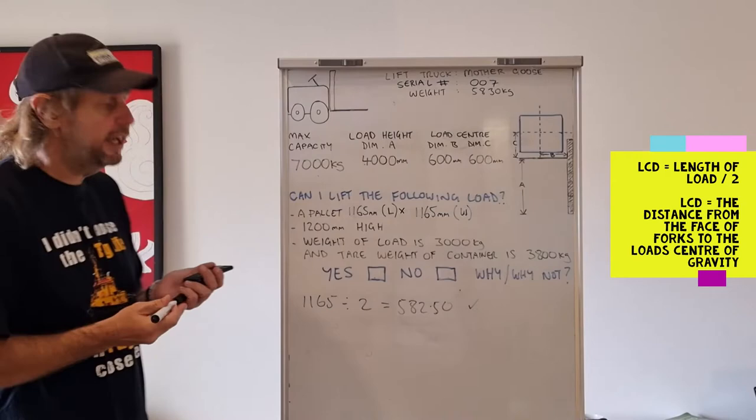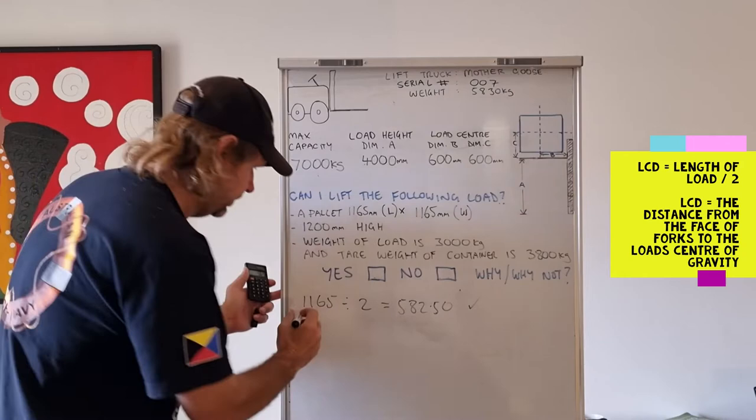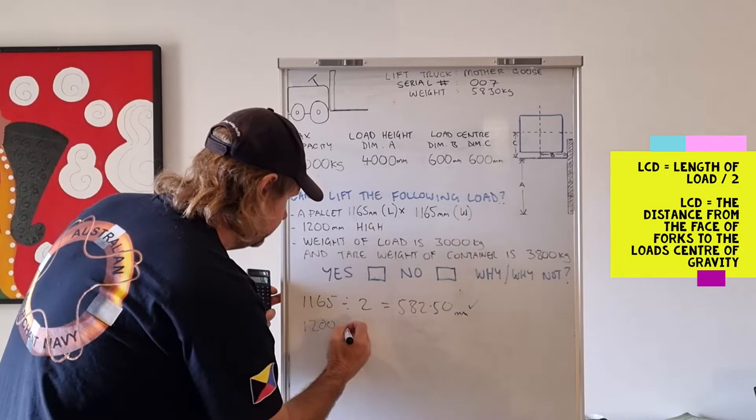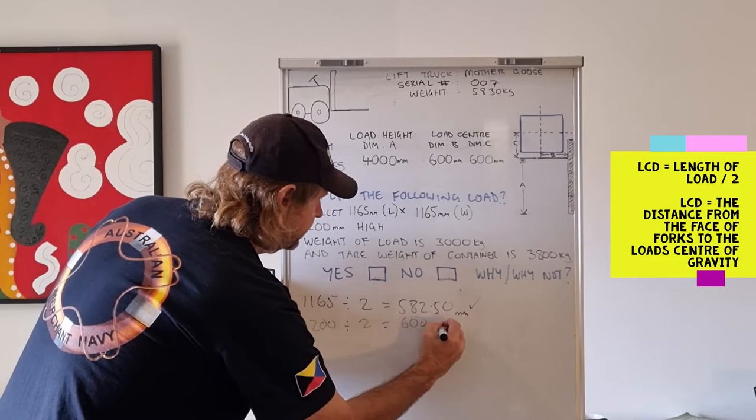So yes, we can lift it according to that part of the problem. 1200 millimeters high. So 1200. I'll put the millimeters there too. 1200 divided by 2 equals 600. So that's on the limit there, but we can still lift it.